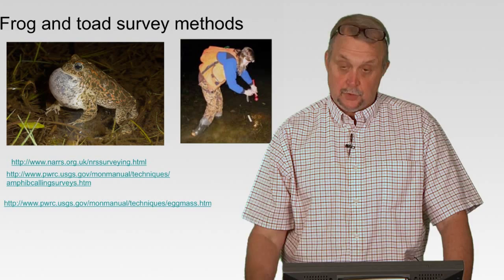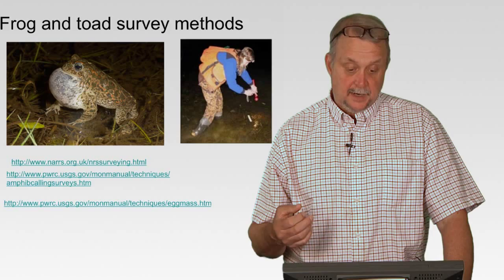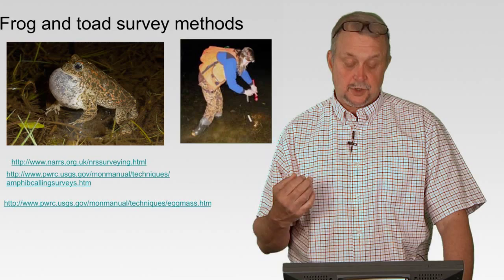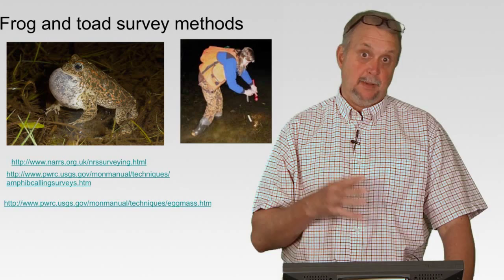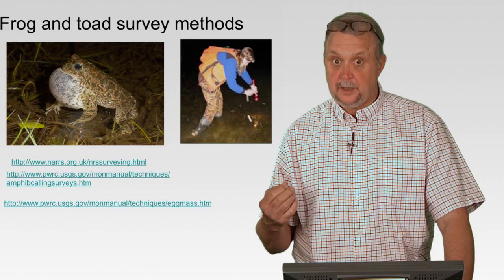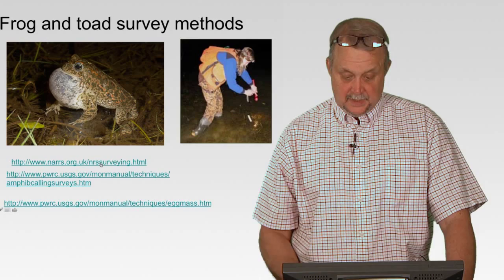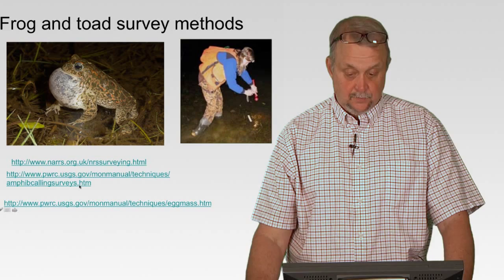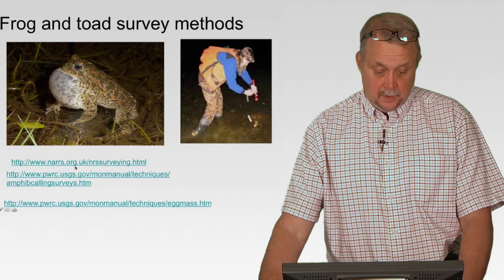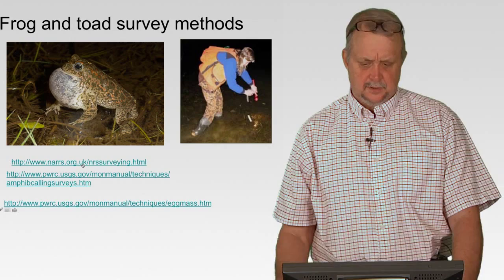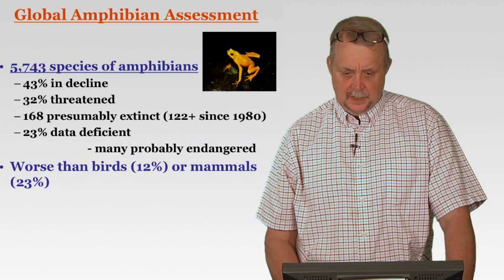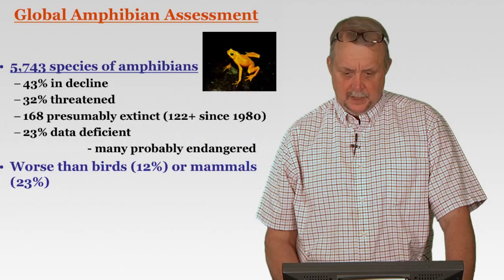Frog and toad surveys are primarily done at night, although you can do them during the day with refugia. A lot of night surveys are done in areas where they know there are toads or frogs calling — they may go out and measure a number of calls, take recordings back to the lab, and determine the number of species calling. Oftentimes you get your waders on, get out there, and look for the frogs and toads. Methods include counting egg masses — which is very good for salamanders — amphibian calling surveys, and visual surveys. Egg mass surveys are becoming more and more common.